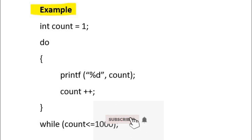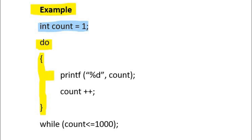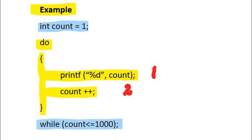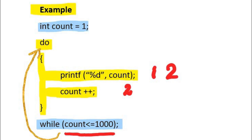Let's understand the do while loop with an example. The code is similar to the while loop with a slight difference in syntax. Integer count is initialized with value 1. The loop starts with the keyword do, and this is the body of the do while loop. As no condition is tested before entering into the body, the control enters and the printf statement executes. The value of count is 1, so it prints 1 on the output screen. Then count++ increments count by 1 and the value becomes 2. The loop's body finishes, then comes the while statement where the condition is tested. If count is less than or equal to 1000, control moves to the start of the loop. These iterations continue till 1000, same like the while loop.